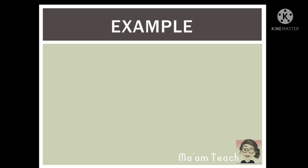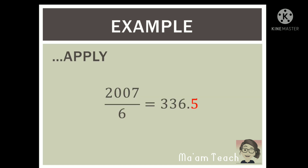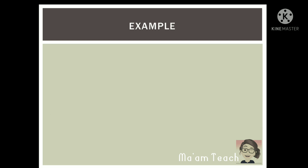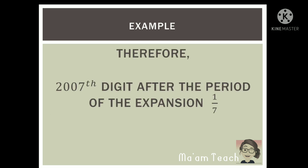Now, going back to our problem — our question is the 2007th digit. So we divide 2007 by 6. Look at the decimal — it is 0.5. Now, based on our pattern, what corresponds to 0.5? 0.5 corresponds to 2. Therefore, we can conclude that the 2007th digit after the period in the expansion of 1 over 7 is 2. And that's the answer for this example.